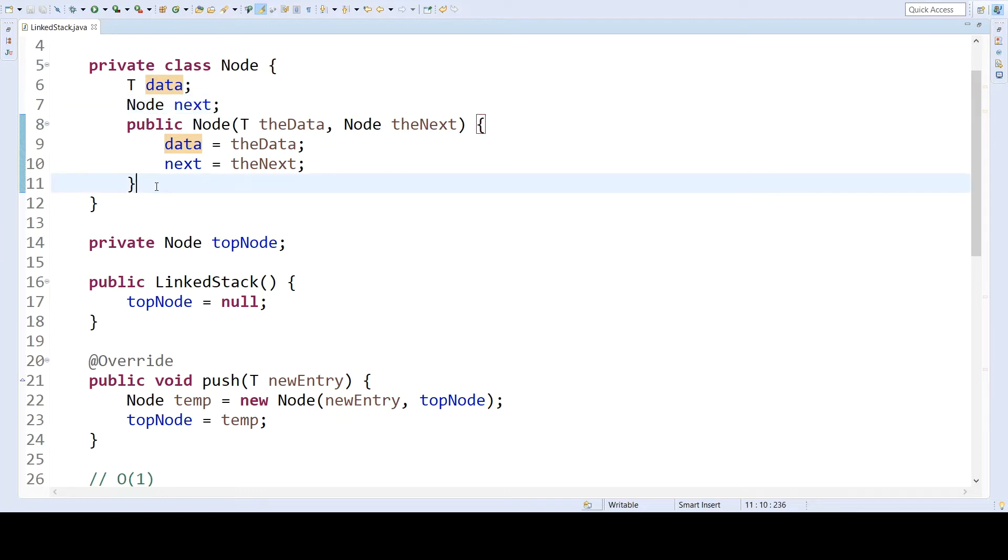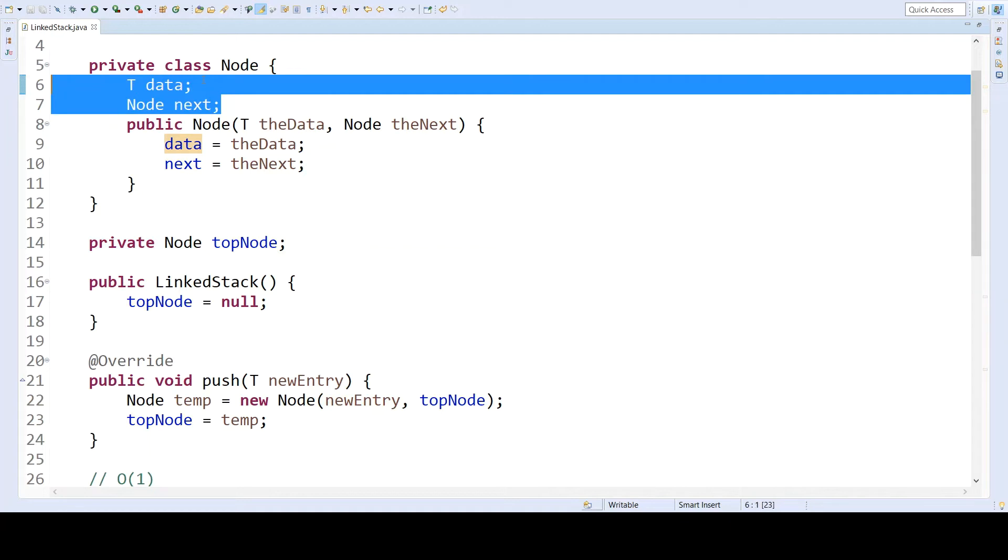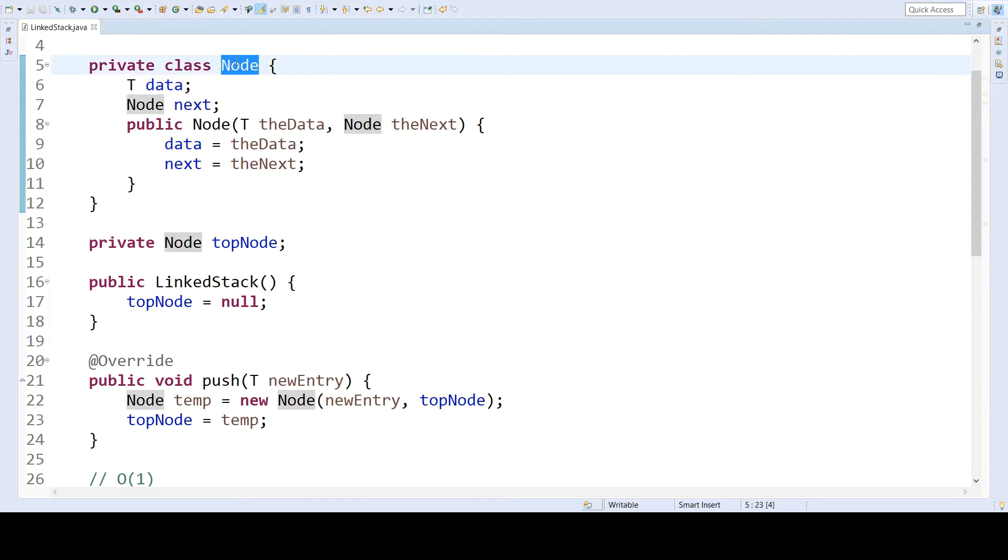We have a constructor that will assign values to these two member variables. And if you wanted to, you could also define getters and setters. But since this is a private class, it's fairly easy and straightforward to simply access the elements directly. The only member variable contained in the class itself is top node. So data and next are member variables, but they are member variables of the node class, of which there will be several instances in a single stack. But for a single given stack, the only member variable is this single top node. When we construct a new stack, we set the top node to null, indicating the stack is empty.